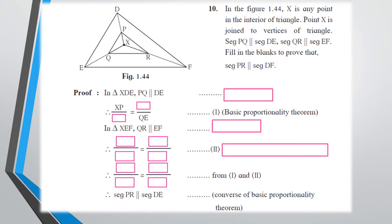This is the 10th question. The textbook has already given a proof framework with spaces to fill in. The question states: in figure 1.44, X is any point in the interior of the triangle, and point X is joined to vertices of both triangles. Segment PQ is parallel to DE and segment QR is parallel to EF are given. We need to prove that segment PR is parallel to DF. We are going to use the basic proportionality theorem twice, then its converse.